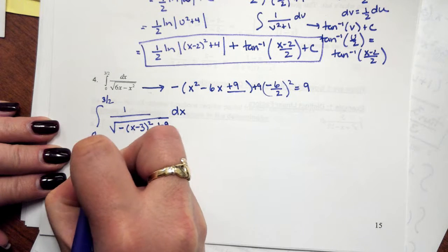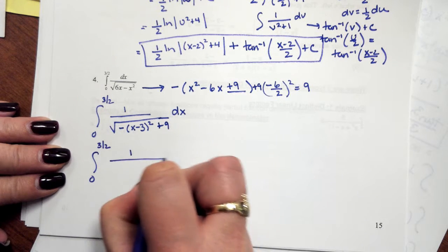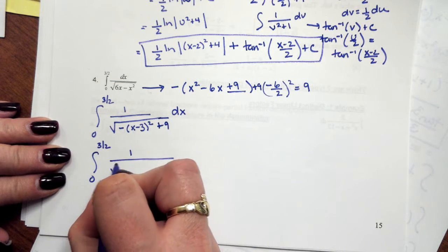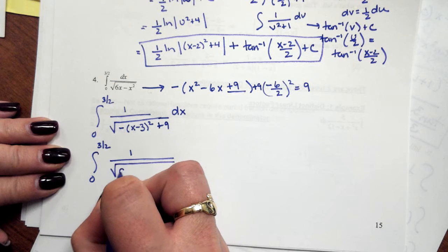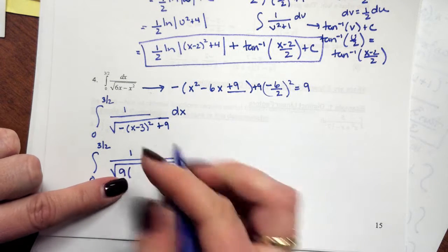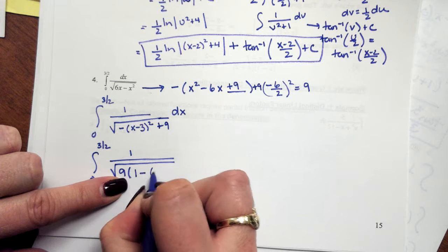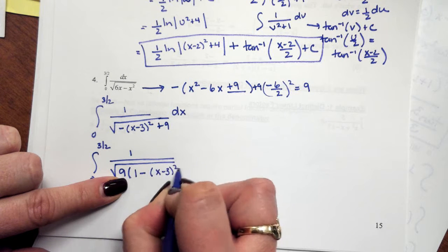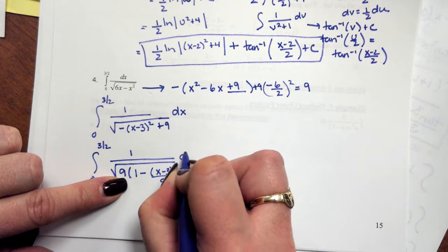So I'll have 0 to 3 halves, 1 over the square root. I'm going to take out the 9, and I'm just going to rearrange the order, putting this as 1 minus x minus 3 to the second power all over 9 dx.